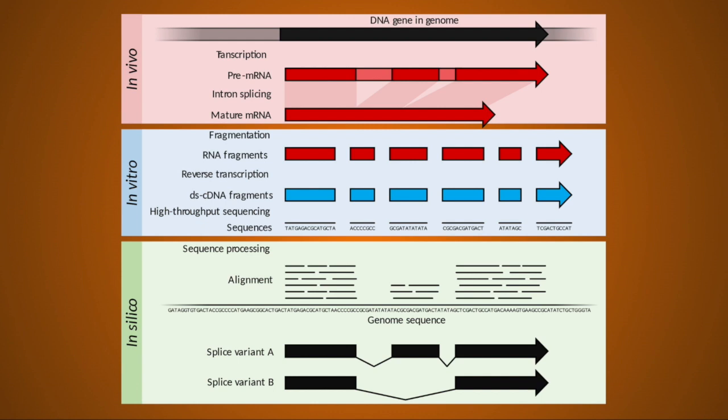Bulk RNA-seq is a little bit older. It was developed shortly after genomic sequencing — next-generation sequencing technology — started becoming cheaper in the mid-2000s. Single-cell RNA-seq, by contrast, was introduced in 2009 and became more popular starting in 2014. But they're not really too far apart. The actual term RNA sequencing was first used in a paper in 2008.